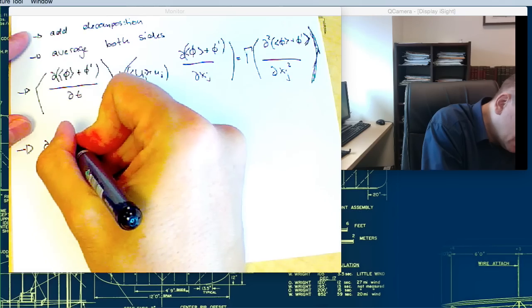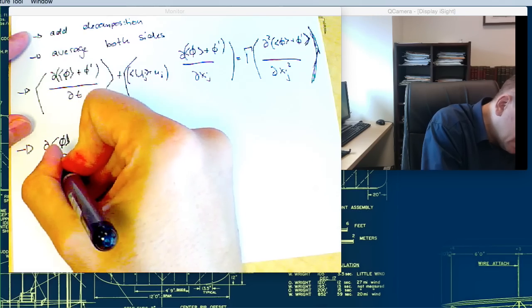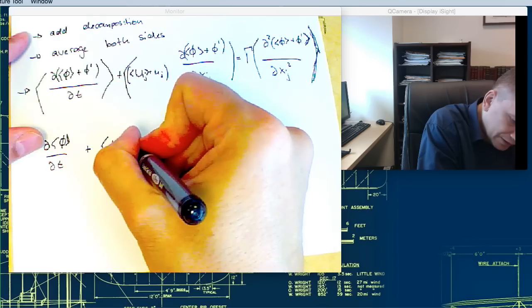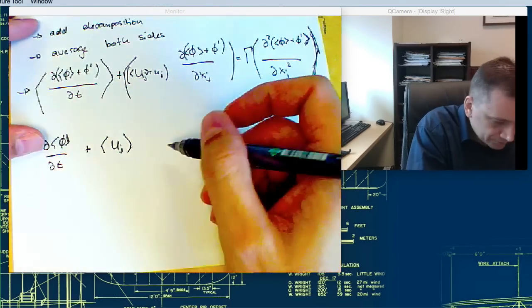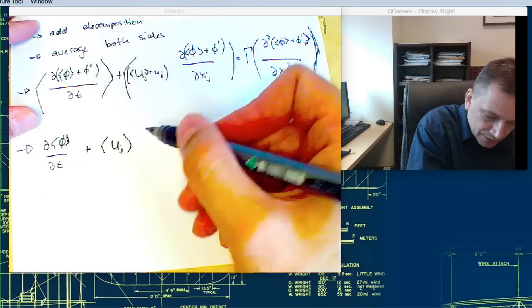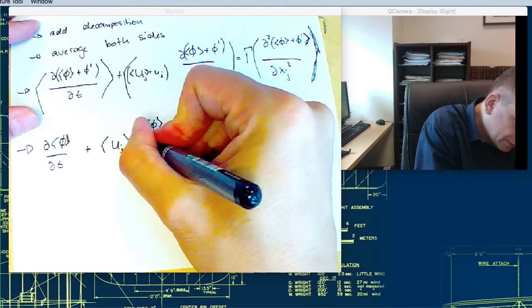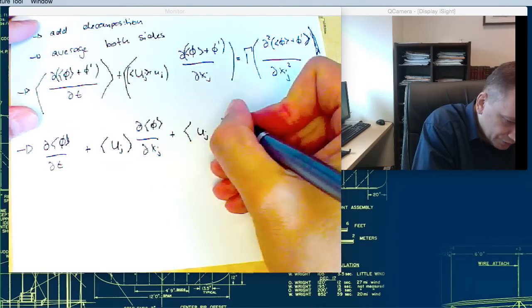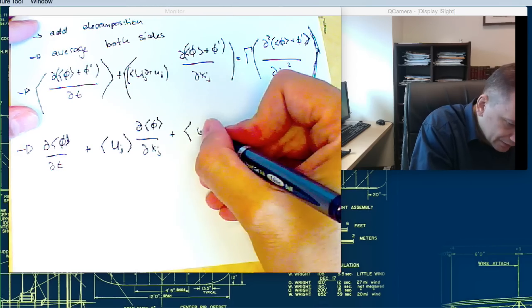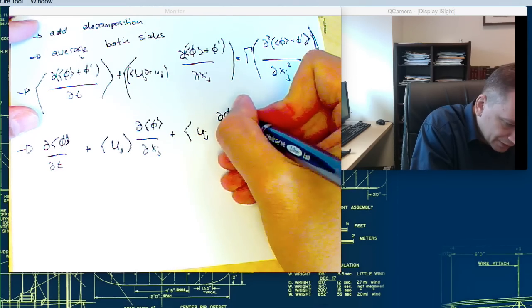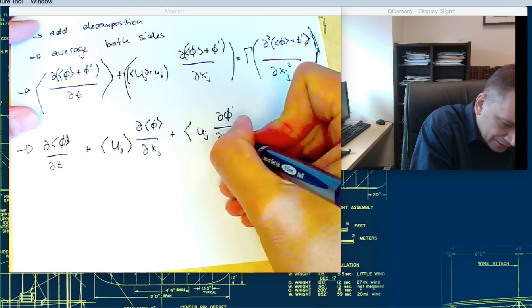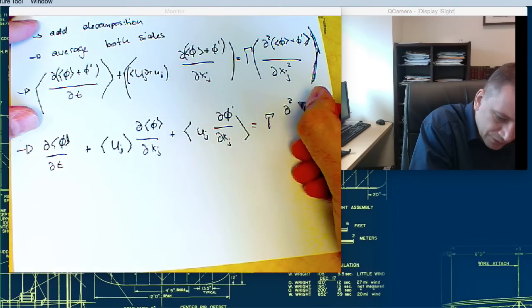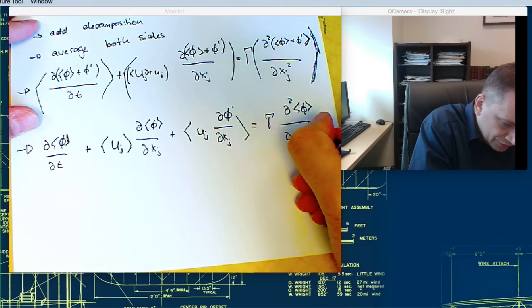then you get ∂φ̄/∂t plus ū_j ∂φ̄/∂x_j plus u_j' ∂φ'/∂x_j equals γ ∂²φ̄/∂x_j².